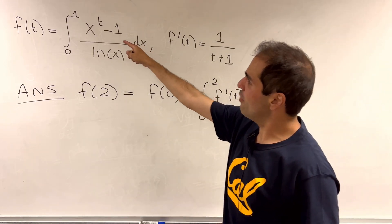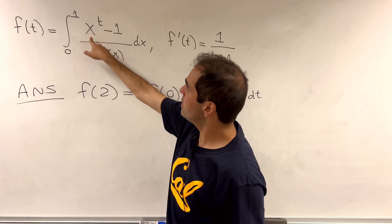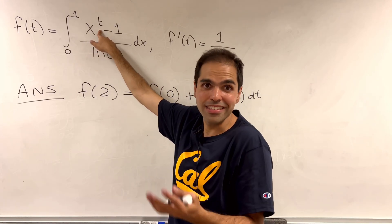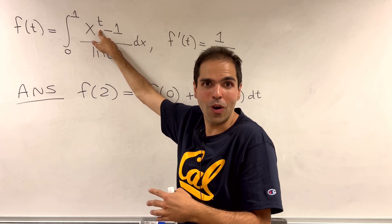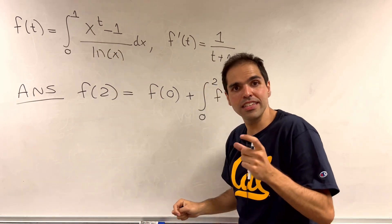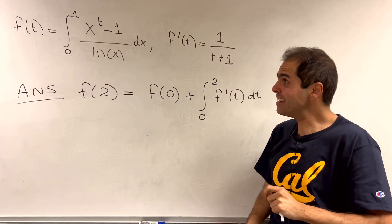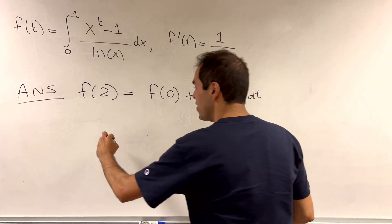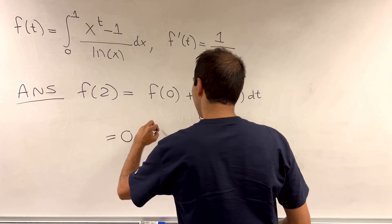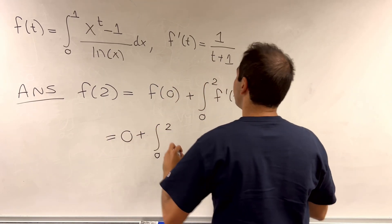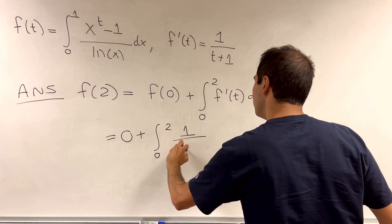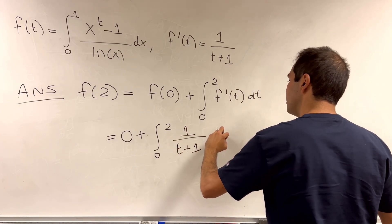Now, what is f of 0? It's the integral of x to the 0 minus 1. But x to the 0 minus 1 is exactly 0. So it's just become 0 plus the integral from 0 to 2 of 1 over t plus 1 dt.